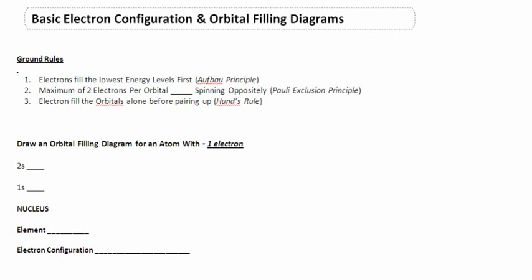Hey guys, it's Mr. Post. On today's video tutorial we're going to be checking out electrons. The goal is going to be for you to be able to write basic electron configurations and also to complete orbital filling diagrams. The whole goal of both of those is to express where electrons are located around a nucleus.